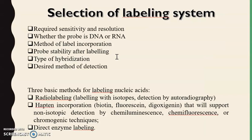Next we will talk about the selection of labeling system. Since probes target particular sequences in DNA or RNA, they should be labeled with an identifying system. The selection depends on the sensitivity and resolution required, whether the probe is DNA or RNA, the method of label incorporation — end labeling or continuous labeling — probe stability after labeling, and the type of hybridization method, whether in situ, phase gauge, or any other technique.